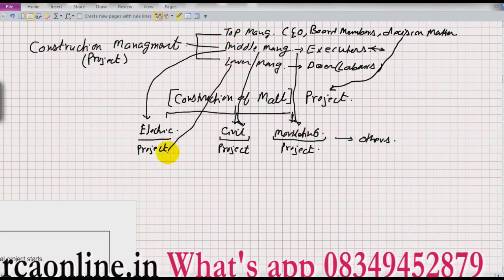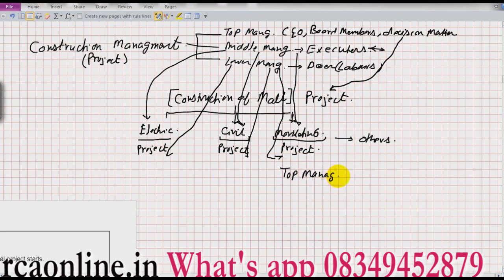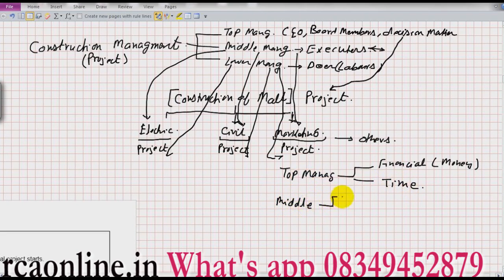The total construction of the mall is a project of top management, who are the decision makers. For middle management there are different parts — electrical, civil, marketing, and many others — and these are the people who execute. Now, for top management the project is different, hence their priorities are different. For top management the priority can be financial, which means money and time. For middle management, the priority is technology and time. Money might not be a concern for them because money is put in by the top management.